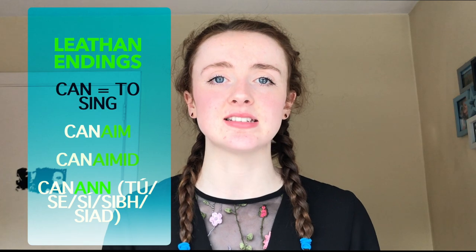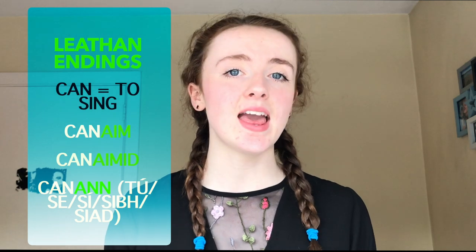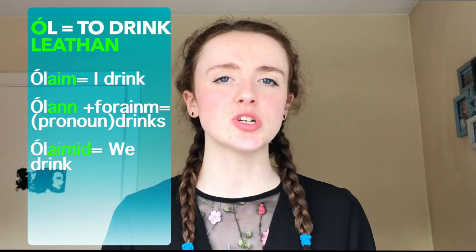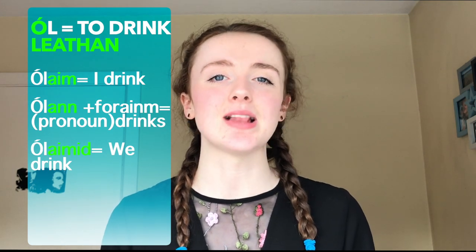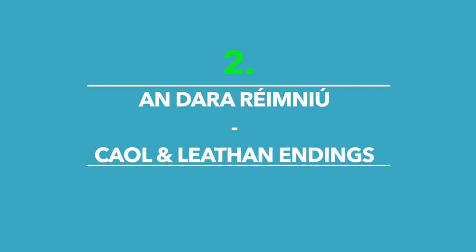For verbs where the last vowel is A, O, or U, the endings are as follows. I'm going to use the verb 'can' — to sing. If you want to just learn one ending, it's 'canann' and then your forainm (pronoun). For the other endings though, to say I sing it's 'canaim', and we sing is 'canaimid'. So A-I-M, A-I-M-I-D, and A-N-N are the endings for Láidín verbs. If the verb starts with a vowel and that is the only vowel — for example 'ól', to drink — you just treat it as the last vowel and apply the appropriate ending.